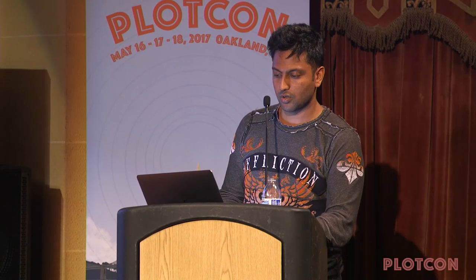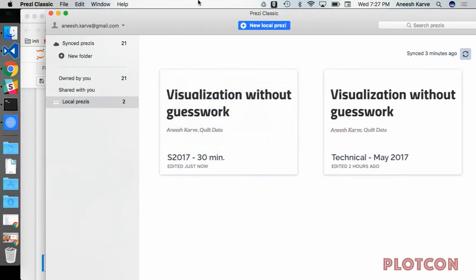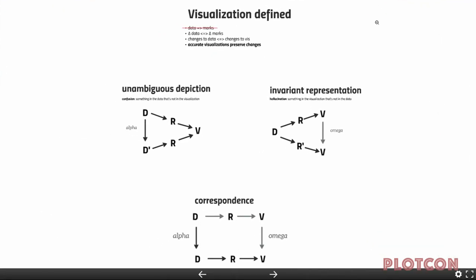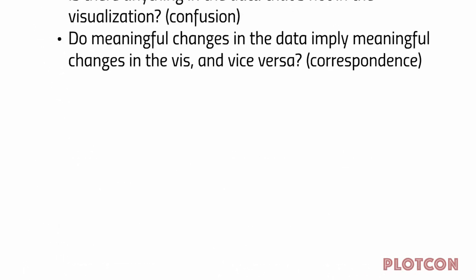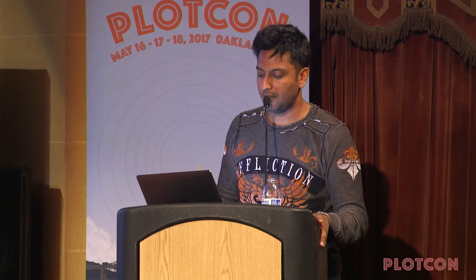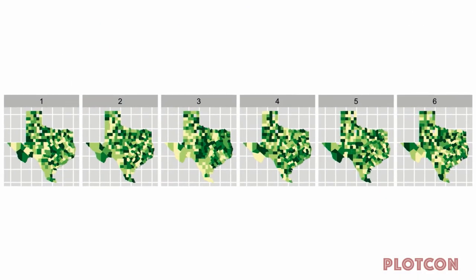There are three very simple questions you can ask yourself to improve visualization. One: is there anything in the visualization that's not in the data? If we see something that's not there, that's a hallucination. Two: is there anything in the data that's not in the visualization? That's confusion. And finally: does the visualization reflect meaningful changes to the dataset? These are the GitHub repositories — I'll make these slides available online.